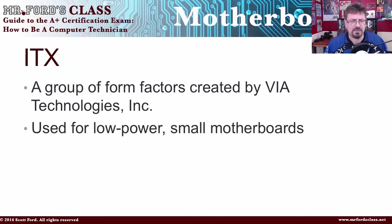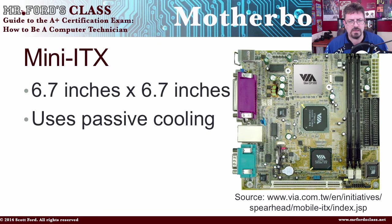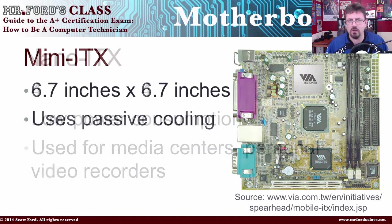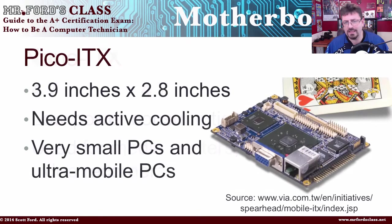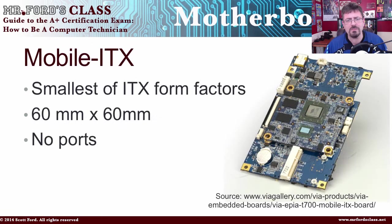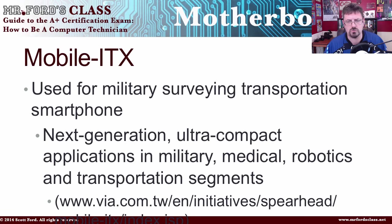Then we have the ITX. ITX came from a group of form factors created by VIA Technology, Inc., used for low-power, small motherboards. This includes the mini-ITX, the nano-ITX, the pico-ITX, and the mobile-ITX. The mini-ITX was 6.7 by 6.7 inches and used passive cooling — cooled by regular surrounding airflow. The nano-ITX was 4.7 by 4.7 inches, with low power consumption used for media centers and personal video recorders. The pico-ITX was 3.9 by 2.8 inches and needed active cooling, used for very small PCs and ultra-mobile PCs. The mobile-ITX was the smallest at 60 by 60 millimeters, had no ports, and was used for military, surveying, transportation, and smartphones.